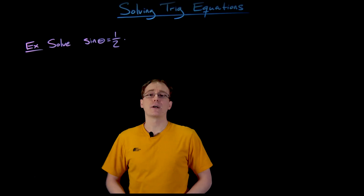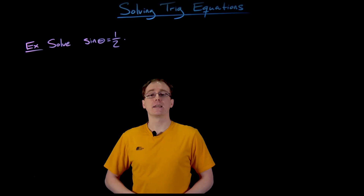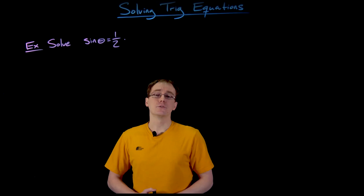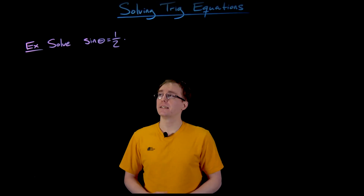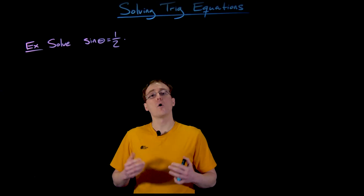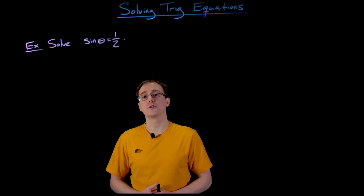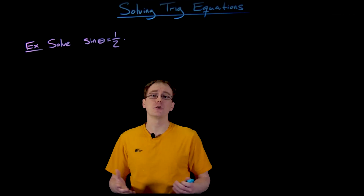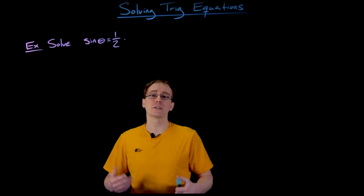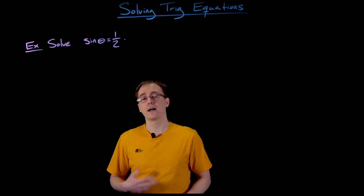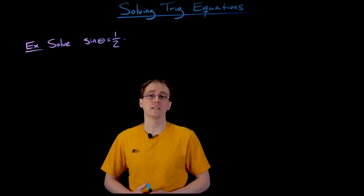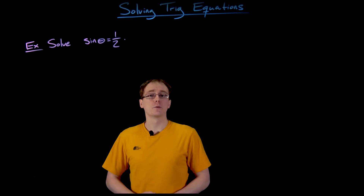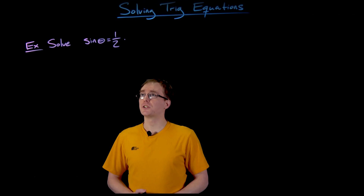In this example we are asked to solve when is sine of theta equal to one half. Whenever we are asked to solve an equation it is implied that we are trying to find all the solutions to our equations. When we were solving quadratic or cubic equations earlier we saw that we would sometimes find two or three unique solutions. The same story is going to be true when we're trying to solve our trigonometric equations.